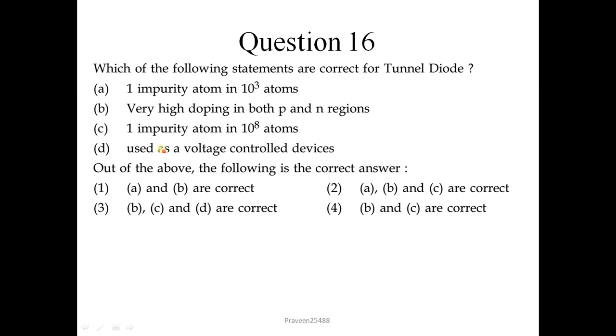Question number 16: Which of the following statements are correct for tunnel diode? The characteristic of tunnel diode we know is that it is heavily doped, 1 in 10 to the power 3. One impurity atom in 10 to the power 3 atoms. So this statement is correct. Very high doping in both p and n regions, this is also correct. One impurity atom in 10 to the power 8 atoms is not correct. Used as a voltage control device is also not correct. So correct option is a and b, option number 1 is correct.